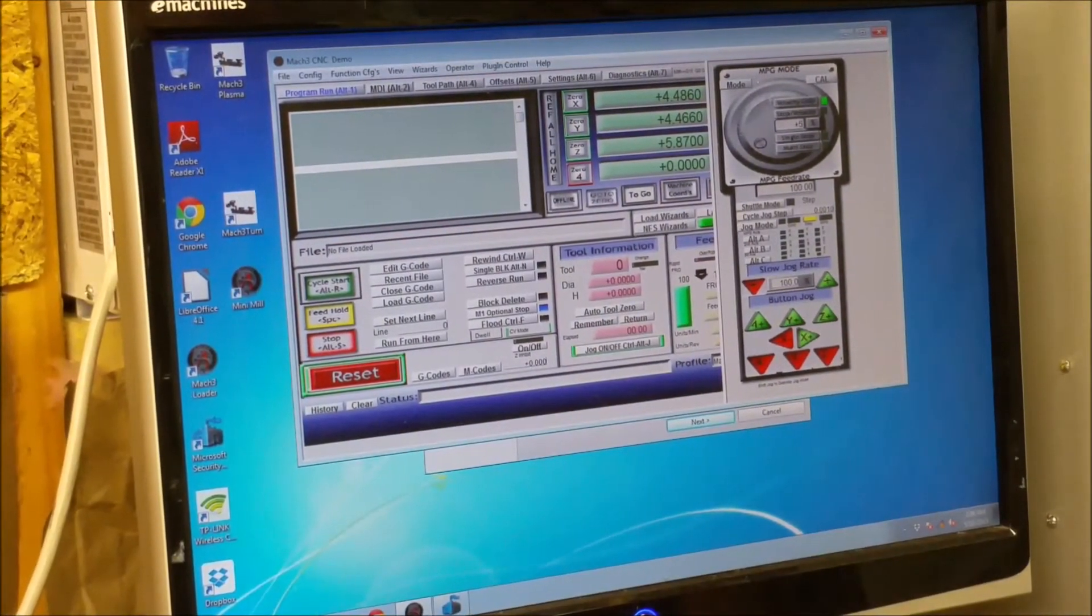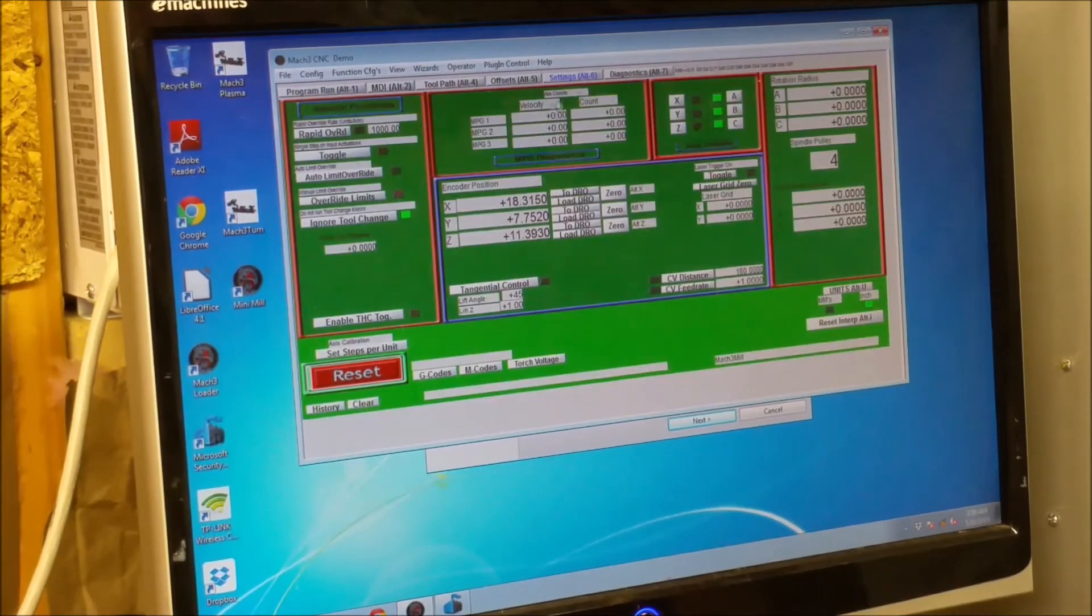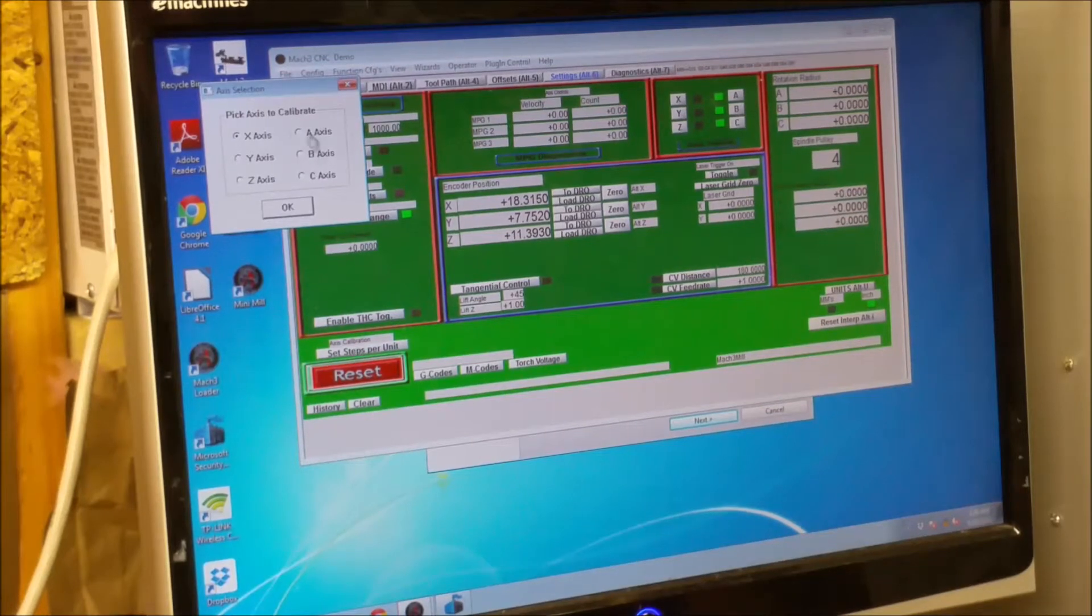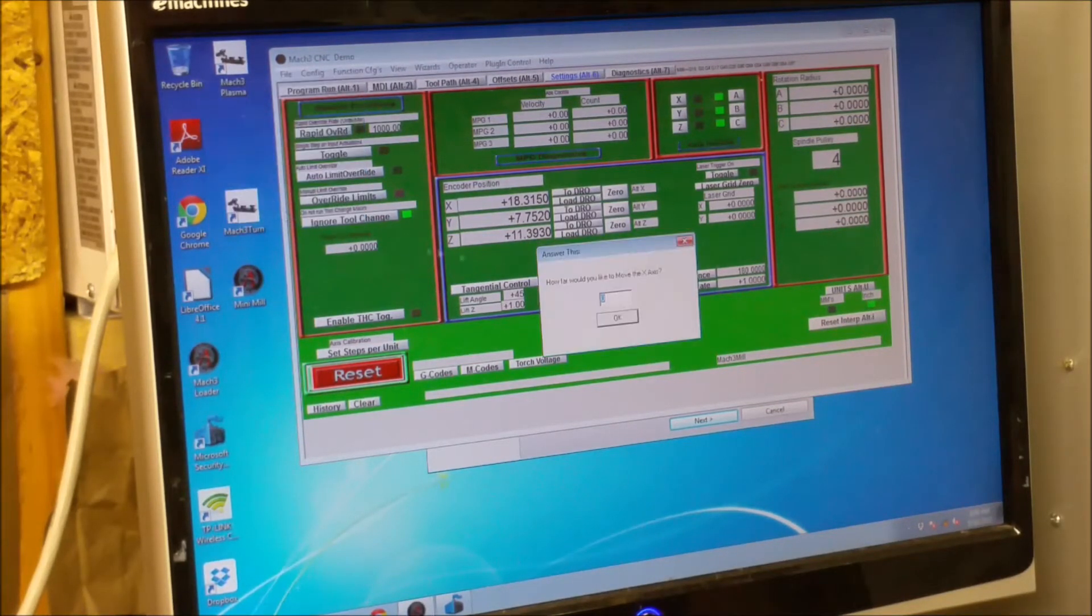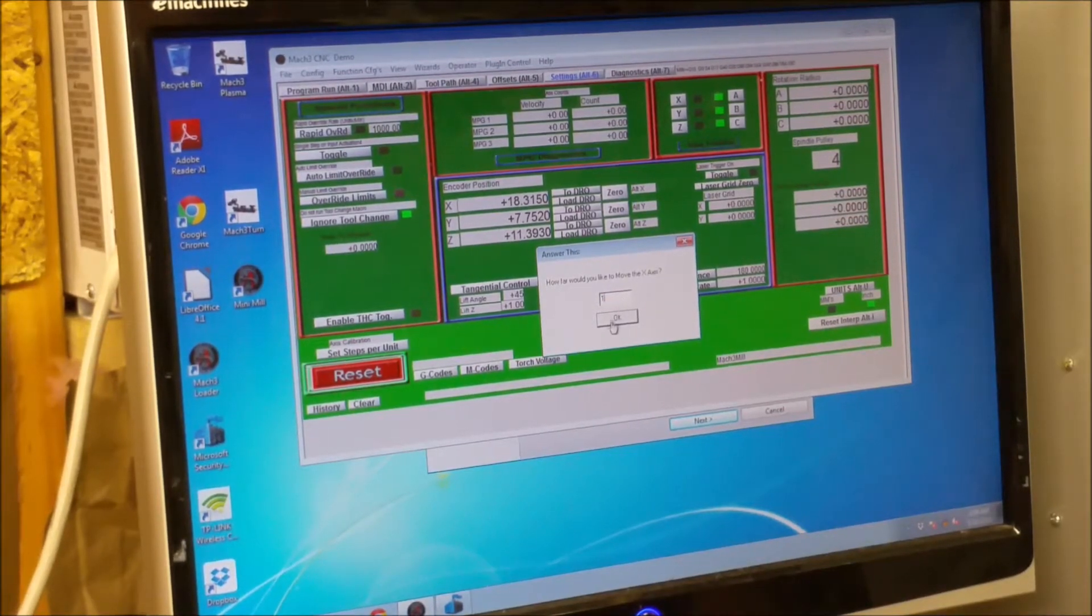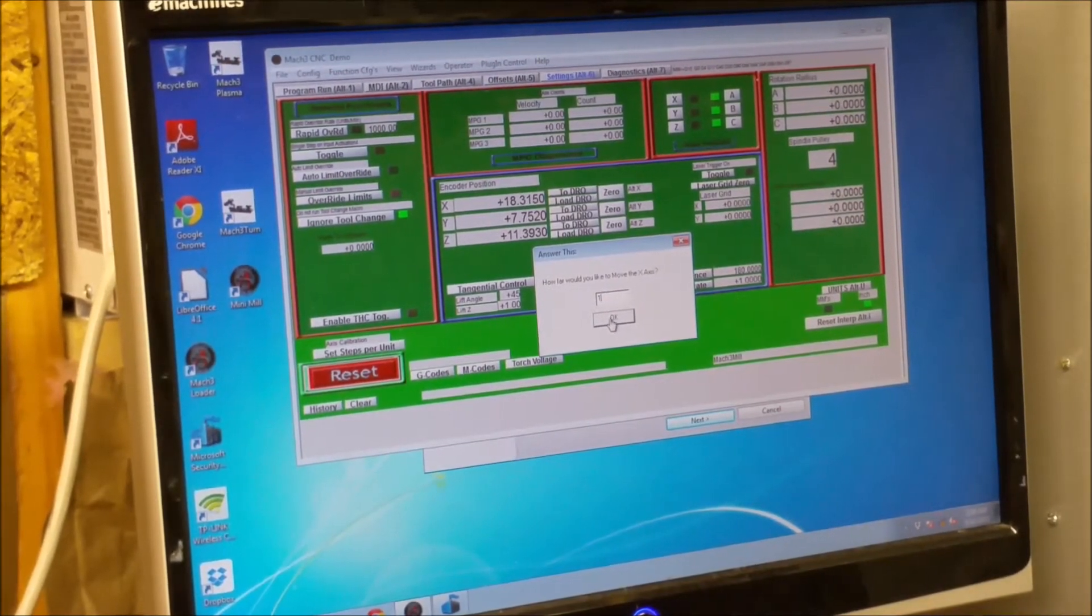We're going to go over to settings and go set steps per unit. X-axis. And we're going to tell it to move one inch and then click OK.